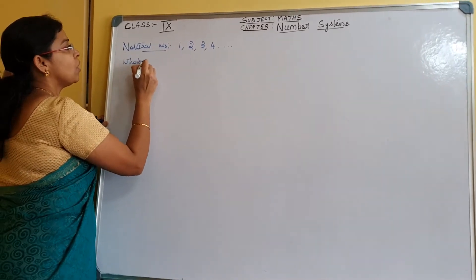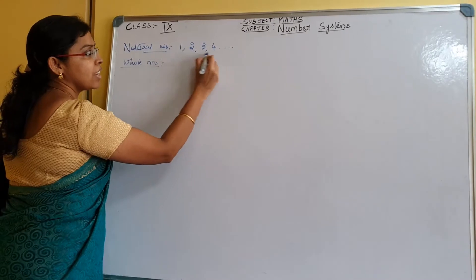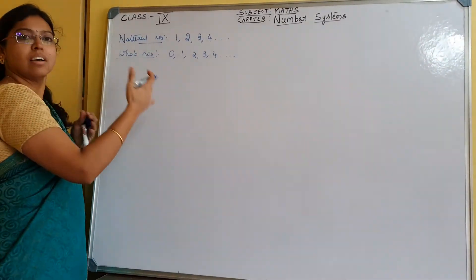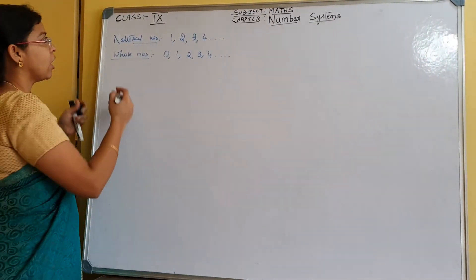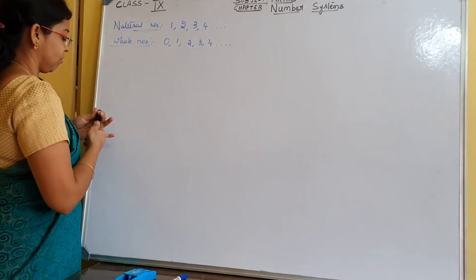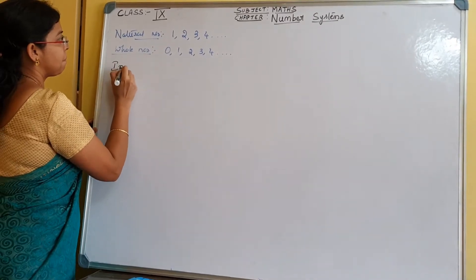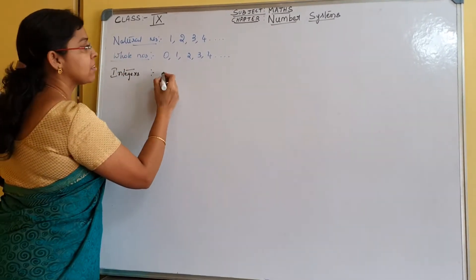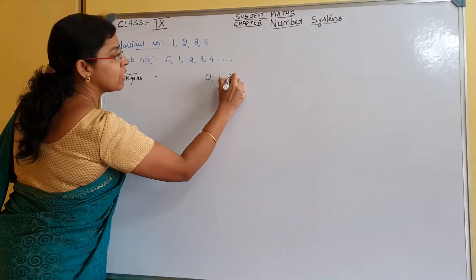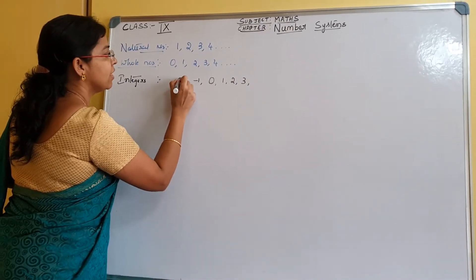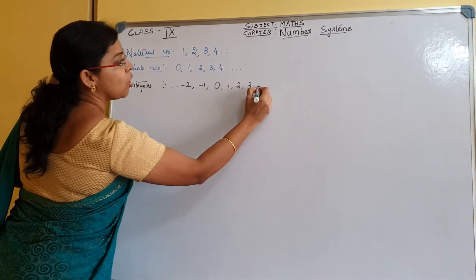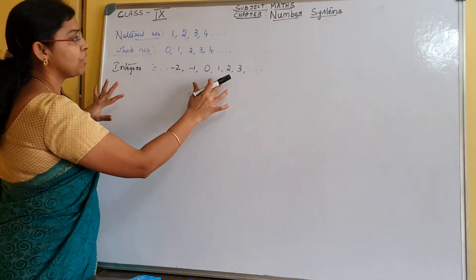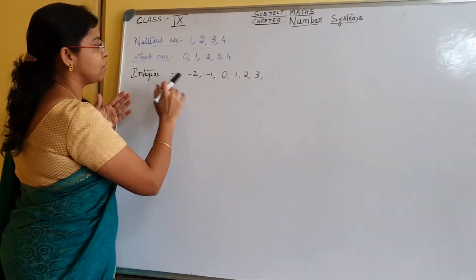What are whole numbers? Whole numbers are natural numbers along with 0. This number system we have already learnt in earlier classes, we will just recall. When we say integers, along with these whole numbers, the negative numbers are also included. 0, the positive numbers on the right hand side and the negative numbers on the left hand side. So on both sides, infinite numbers are included — this is the set of integers which includes 0, positive numbers and negative numbers.